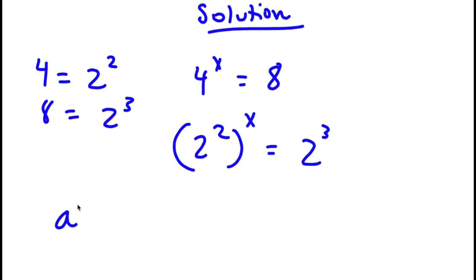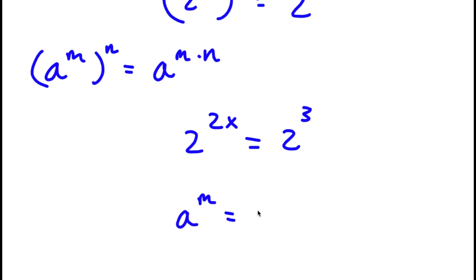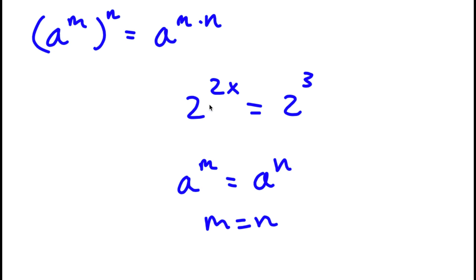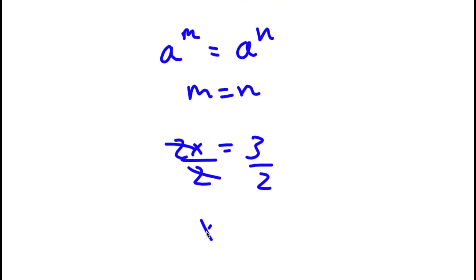Now, if I have something in the form a to the power of m to the power of n, this is simply equal to a to the power of m times n. So 2 to the power of 2 to the power of x equals 2 to the power of 2x, which is equal to 2 to the power of 3. If a to the power of m equals a to the power of n, then m equals n. So in this case, 2x is equal to 3. Dividing both sides by 2, these cancel, and I'll be left with x is equal to 3 over 2. So this is my answer.